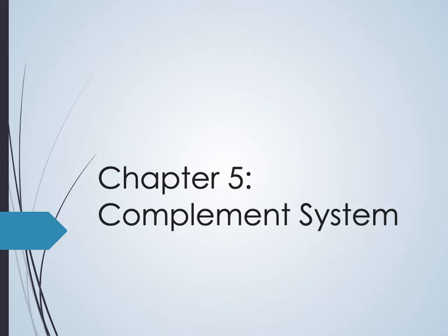This audio lecture covers chapter 5, the complement system. The complement system bridges adaptive and innate immunity. The classical pathway requires an antibody to initiate it, so there's an adaptive component — antibodies produced by B cells mean you must have seen the antigen before. The alternative and lectin pathways do not require antibodies, so complement can activate even if you haven't encountered a pathogen before.